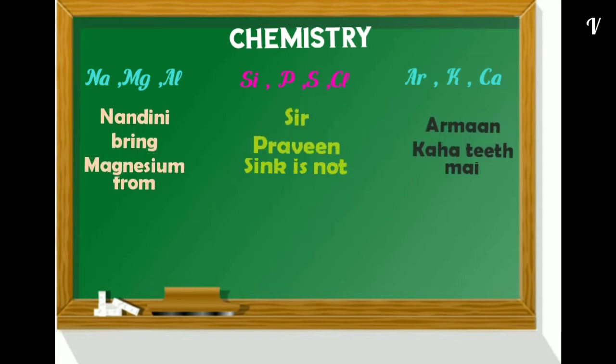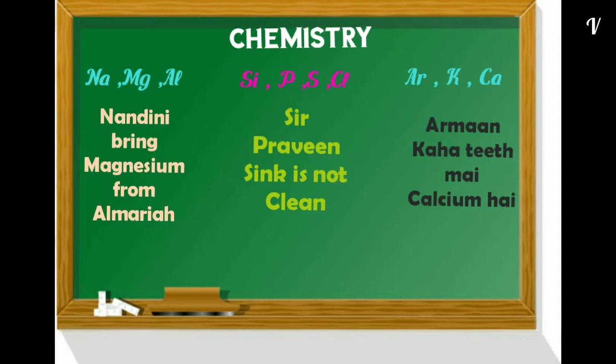Sodium, Magnesium, Aluminium, Silicon, Phosphorus, Sulphur, Chlorine, Argon, Potassium, Calcium. Nandini bring Magnesium from Almara, Sir Praveen Singh is not clean, Arman kaha teeth me Calcium hai. You can check the capital letter or capital N, small letter followed by. And here Magnesium is Mg same, and Calcium also.